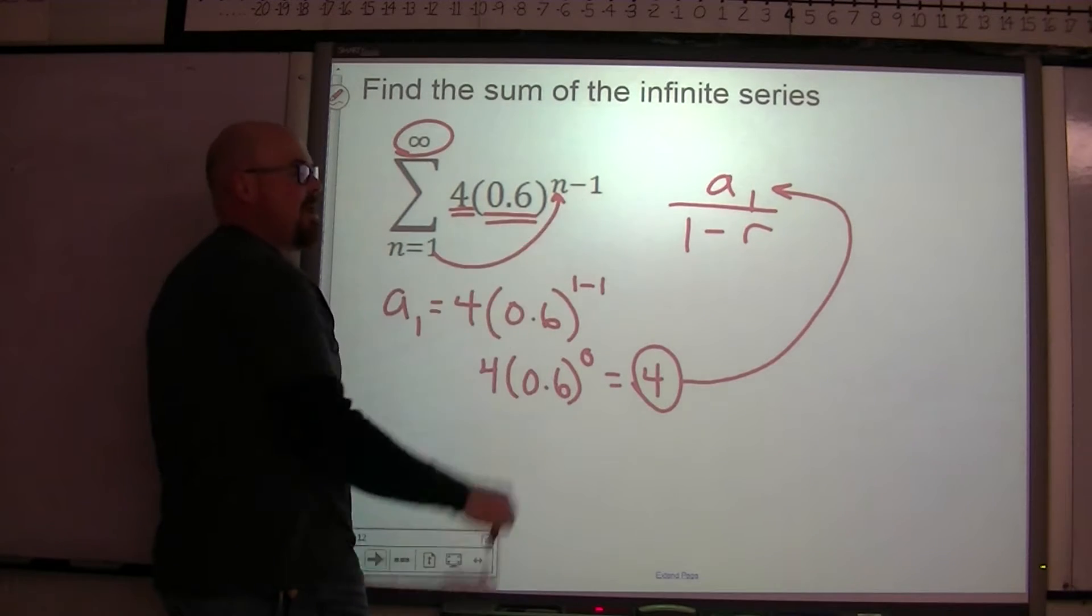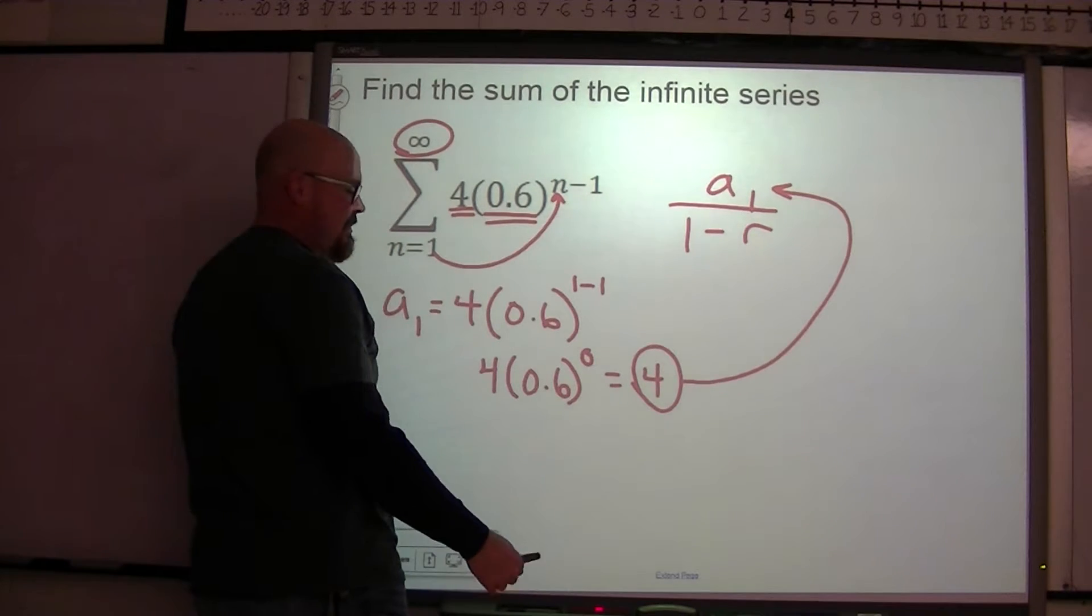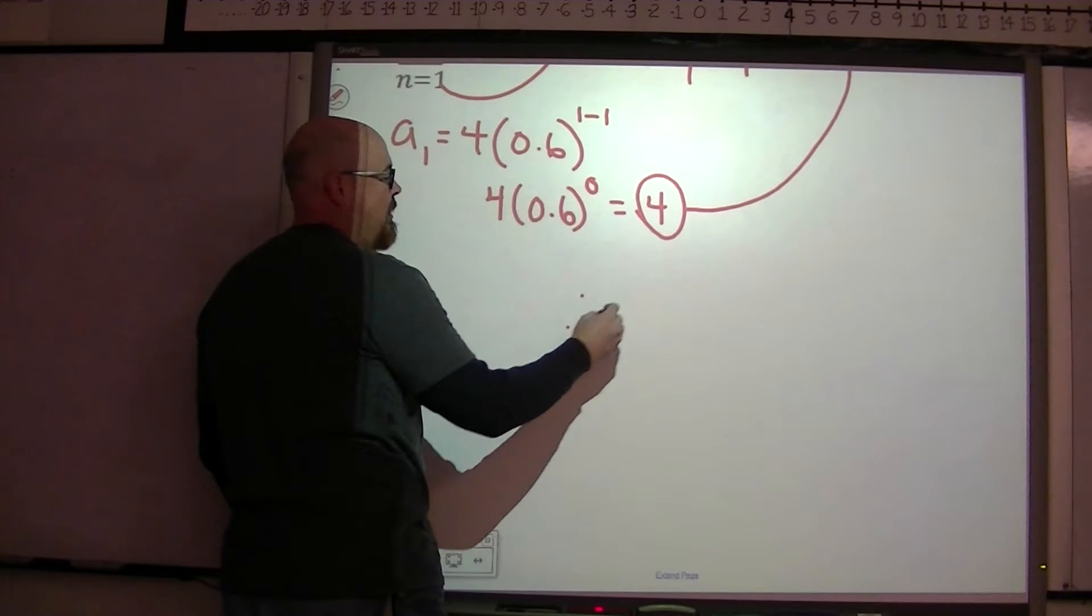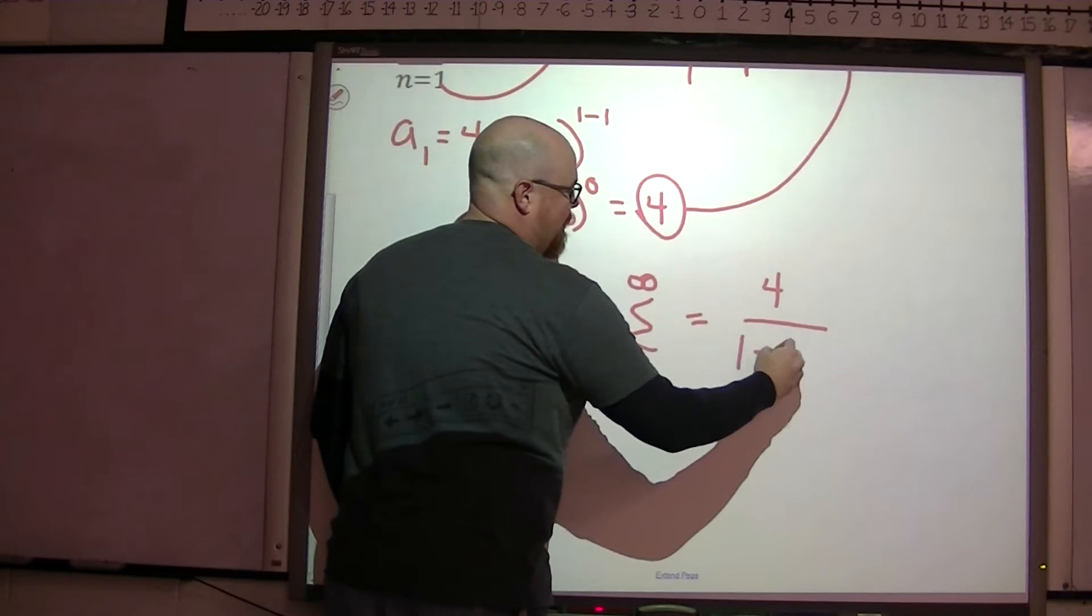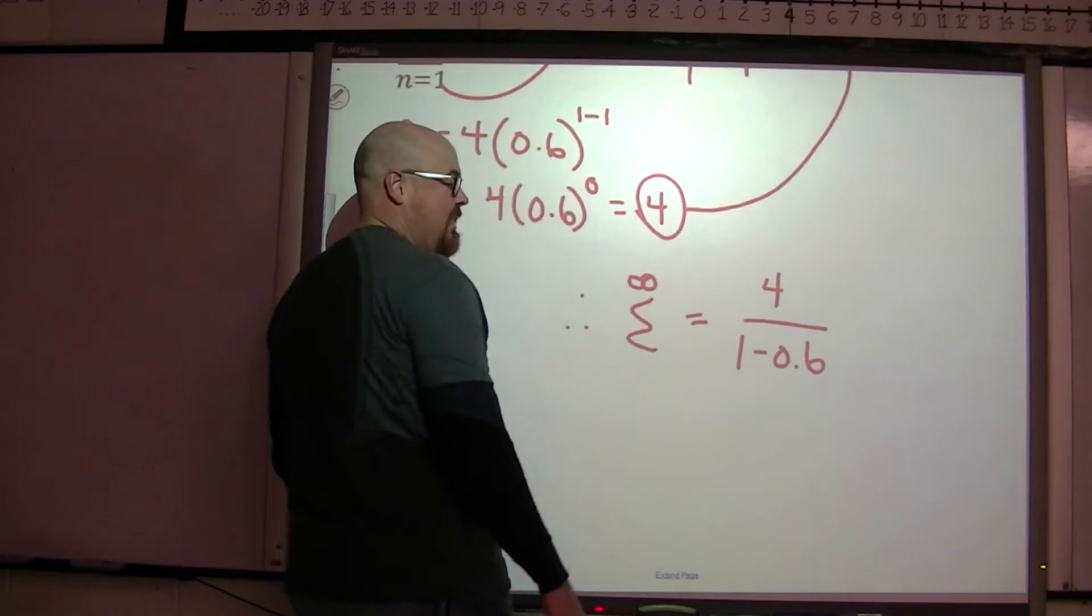The common ratio is whatever the base of that exponent is. That's 0.6. Therefore, our infinite sum is 4 over 1 minus 0.6.